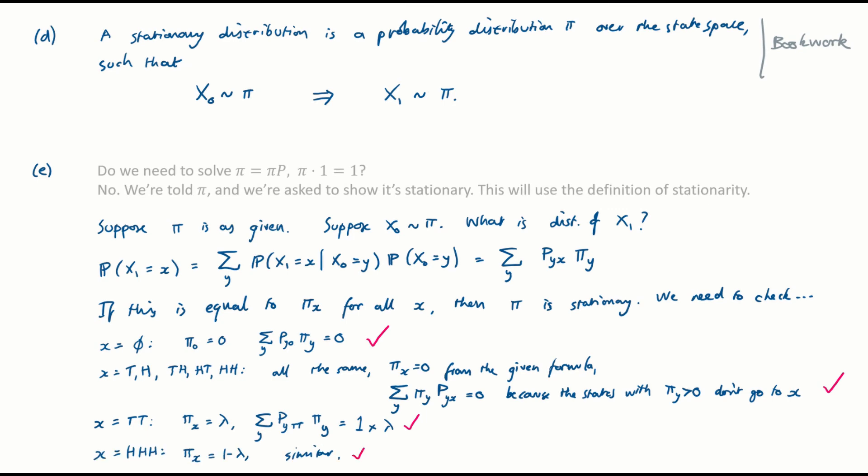Similarly for the final state HHH. The only thing worth mentioning: the question says lambda is in the range 0 to 1. Why does that even matter? Simply, if lambda is outside that range, then one or other of these two values is not a valid probability, so we wouldn't even have a probability distribution in the first place. We've proven that pi is a stationary distribution.